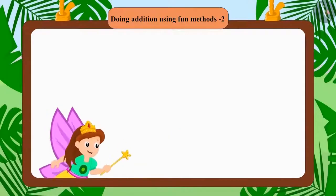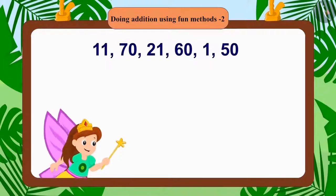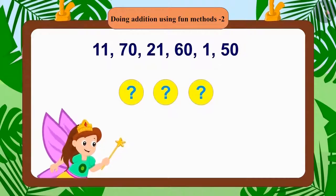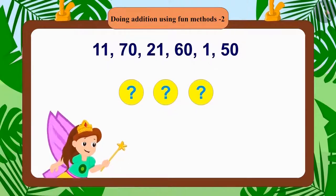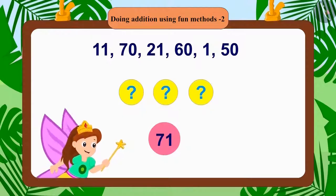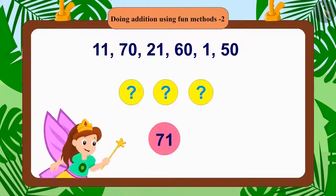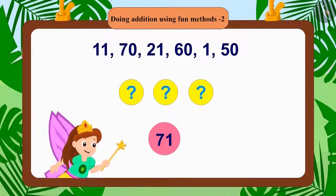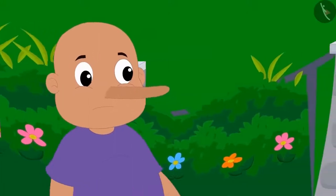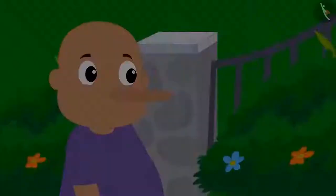The angel showed Bablu these numbers and said that he will have to make 71 by adding these numbers in three different ways. And remember, he can only take two numbers at a time. The next day, Bablu roamed around sad throughout the day and did not do any mischief.